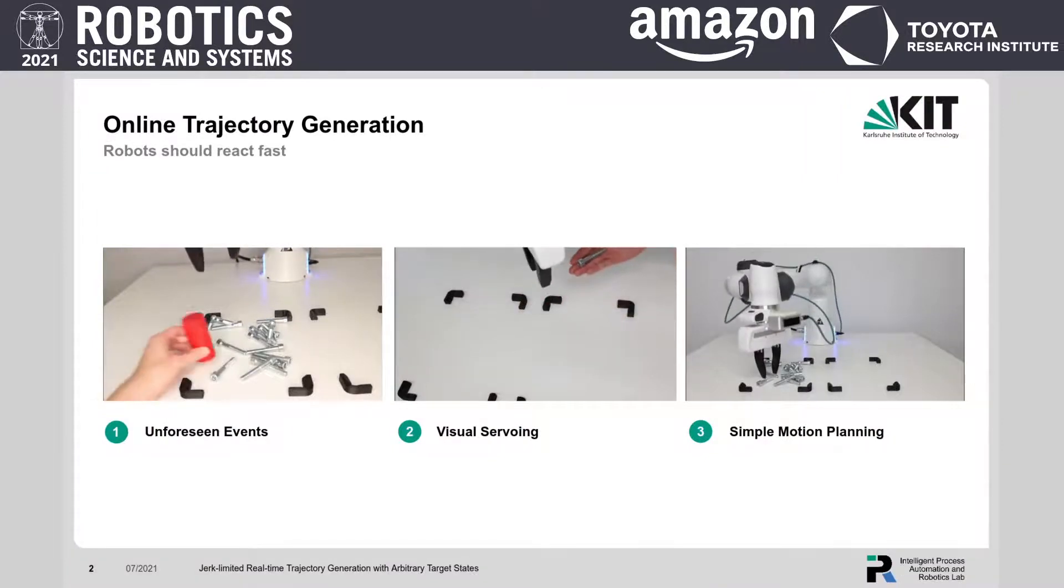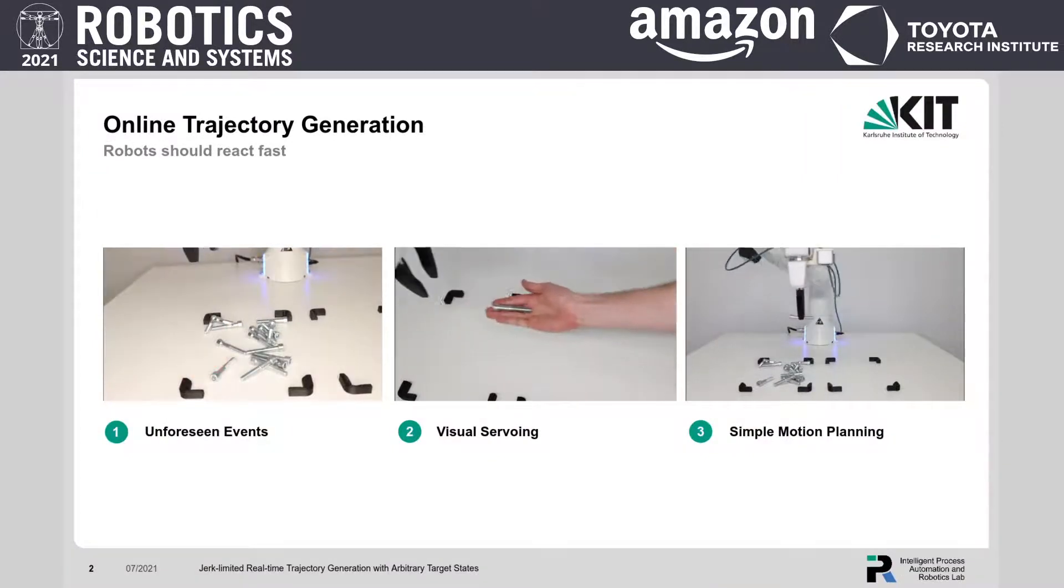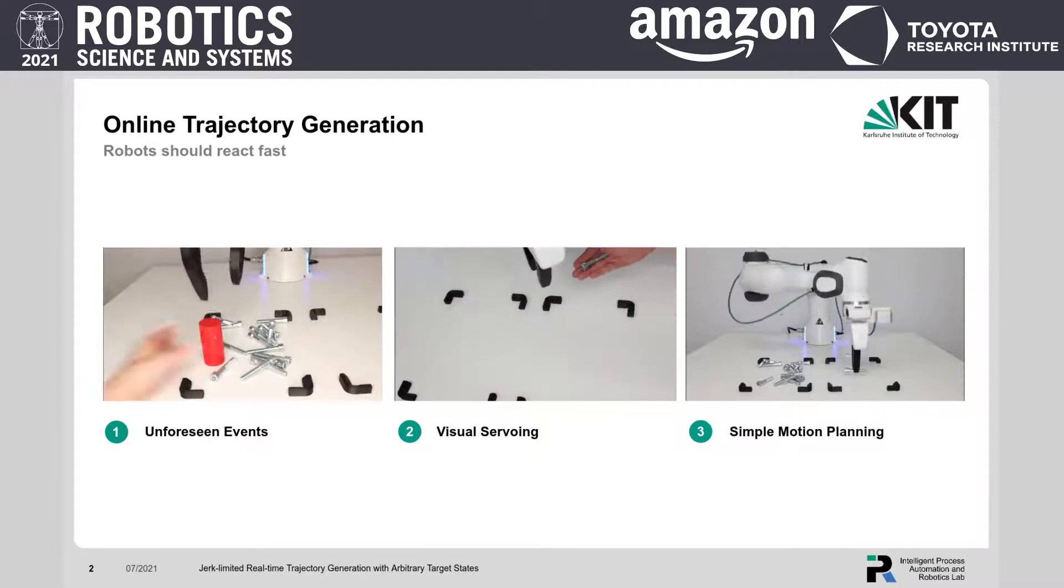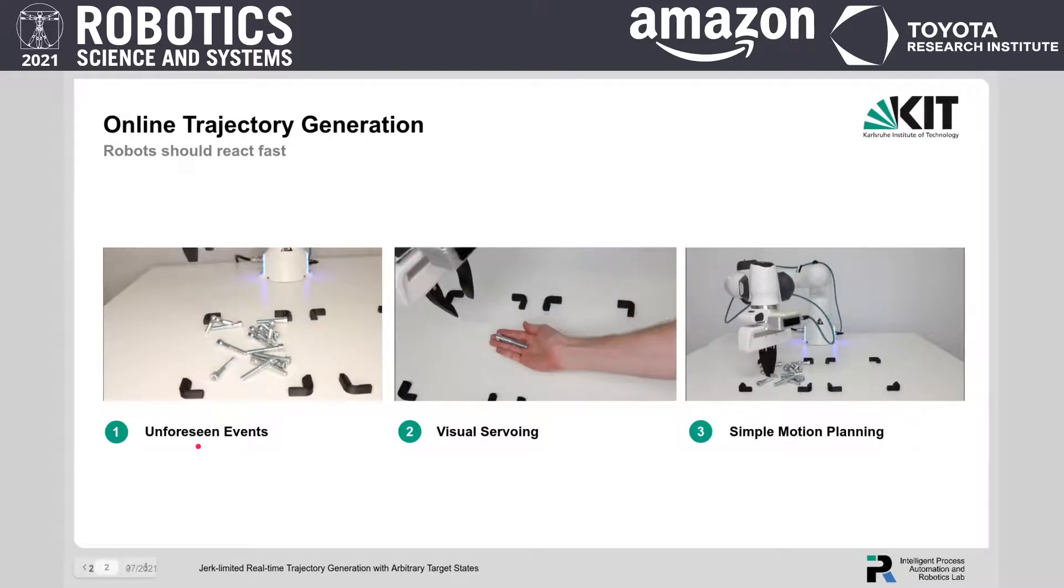We all want our robots to do very fancy things. They should be fast, safe, generate smooth motions and should react to novel sensor input on the fly. In my case, I'm doing a lot of experiments on learning for grasping and manipulation.